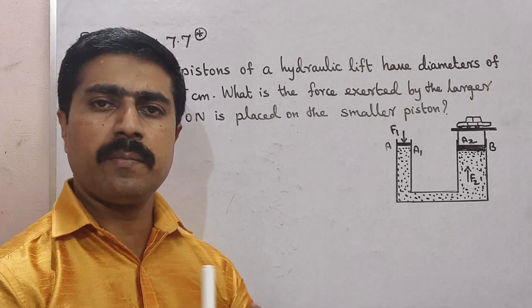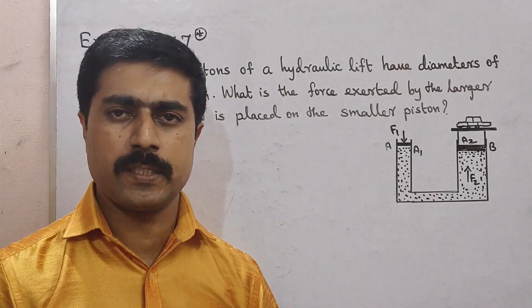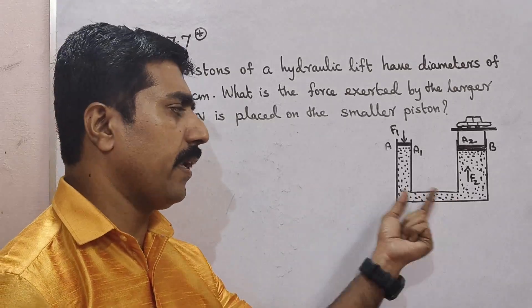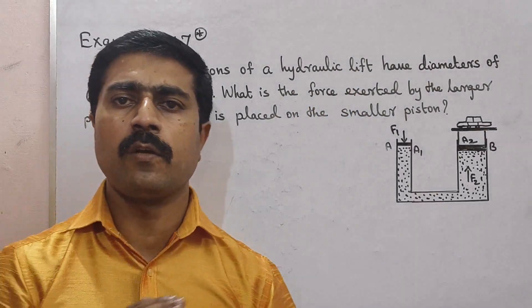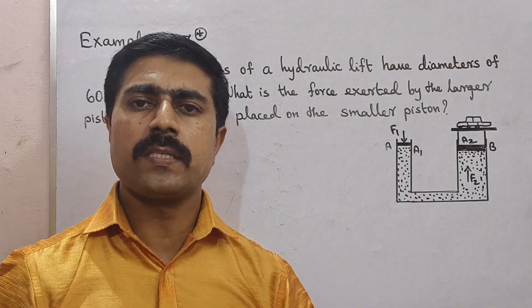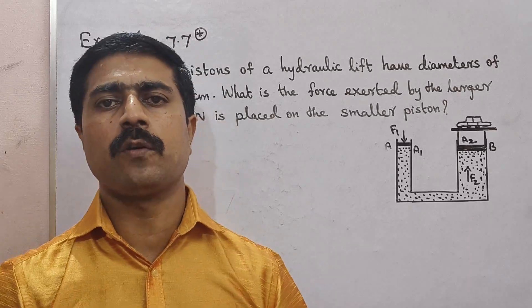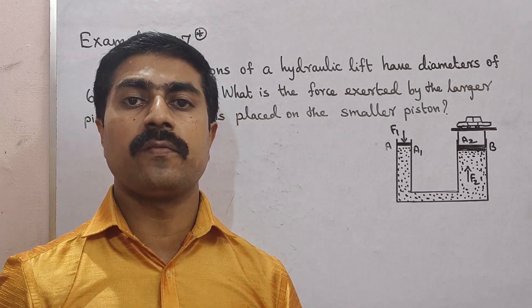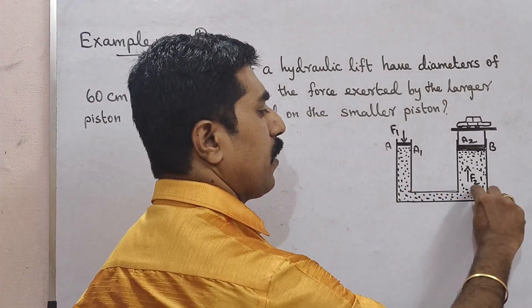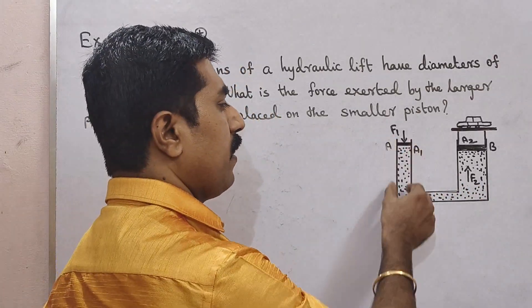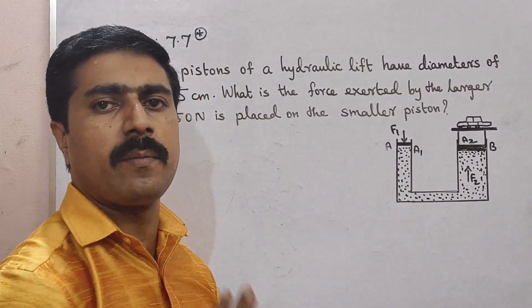So this is a diagram. This is a hydraulic lift. If you look at a horizontal tube, there are two vertical cylindrical pipes connecting.